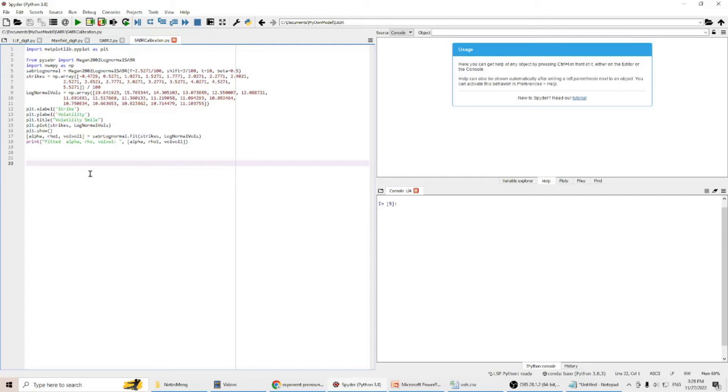In order to calibrate SABR model, you need two series of data: one is the strike price, another is the volatility. After we fit all those strike price and volatility data pairs into this function, we can call lognormal.fit and do the calibration.